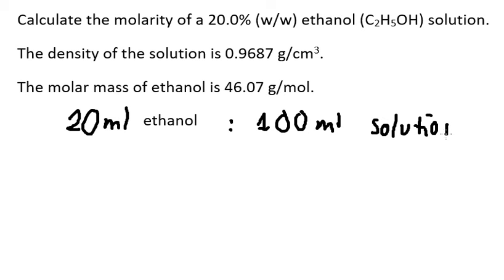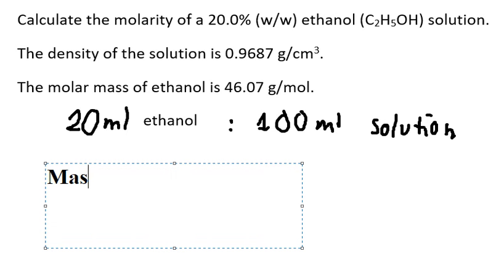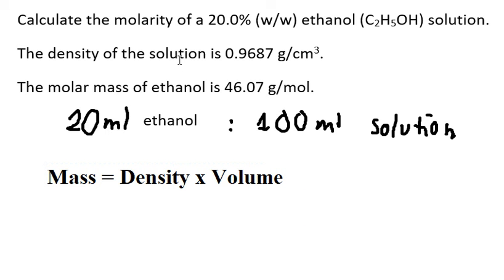So now we want to find the mass, because if we have the mass we can find the moles. For this one we have the formula - the mass should be the density multiplied by the volume. So the density of alcohol is this one.